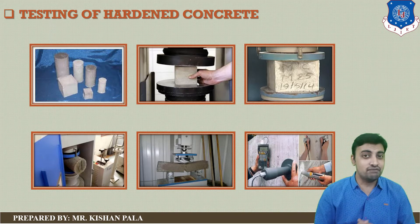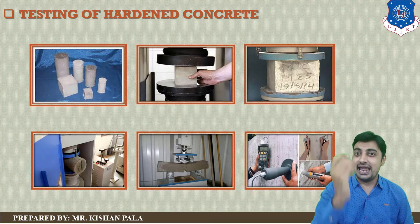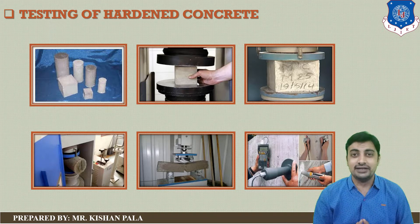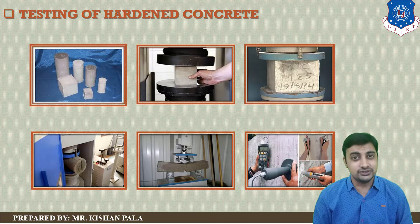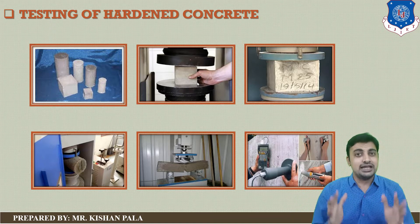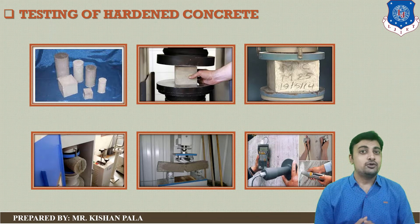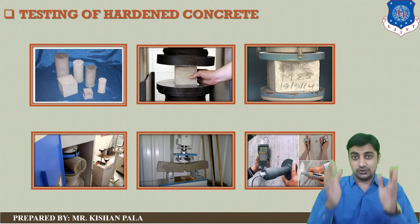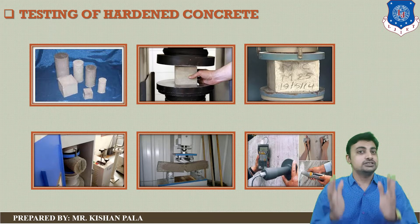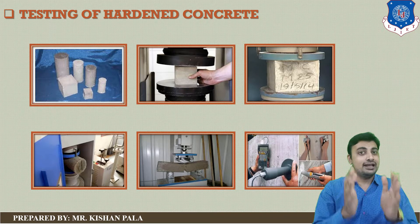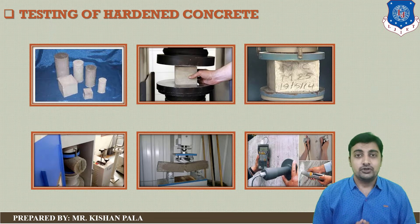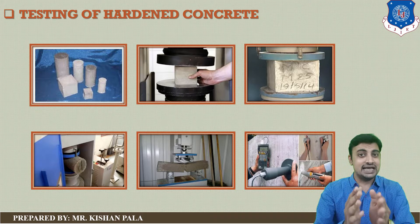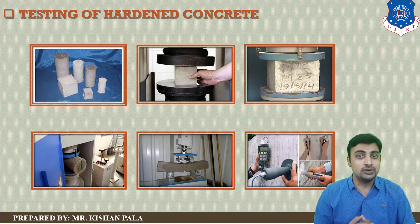You have to find out the strength at 28 days for a particular mix. For example, if you are using M25 grade of concrete, you have to ensure that your concrete's compressive strength will give you 25 N per mm² at the end of 28 days at your site. You have to identify the hardened property or strength of the concrete mass through laboratory testing to ensure it meets the designed strength for the particular site.